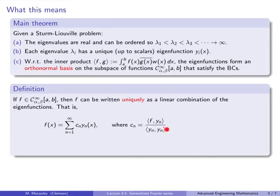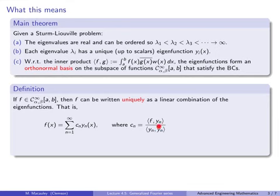So c_n is the inner product of f and Y_n divided by the inner product of Y_n with Y_n. We have to divide by this because, in general, the Y_n's need not be unit vectors. In Fourier series, we're given sines and cosines, and we know those are unit vectors. But in general, when we find an eigenfunction, it need not have unit length. We could always normalize it, but if we want to keep it in a polynomial form with integer coefficients, then we have to divide by Y_n dot Y_n.